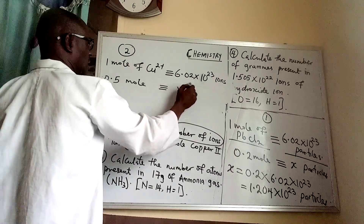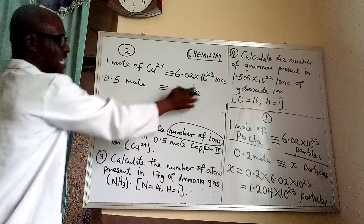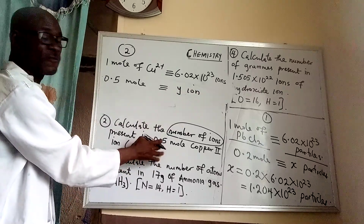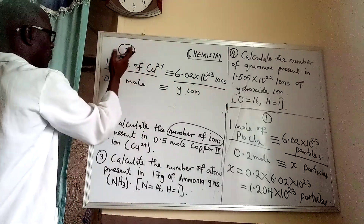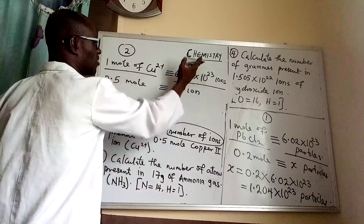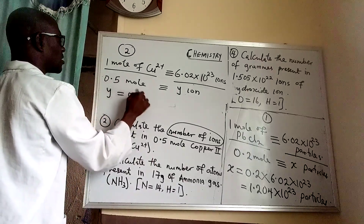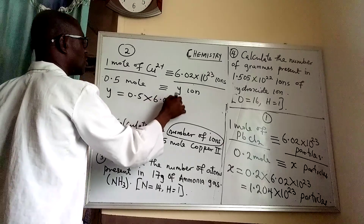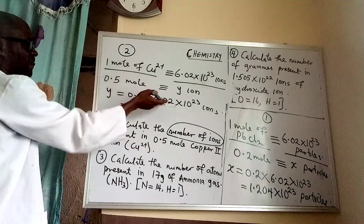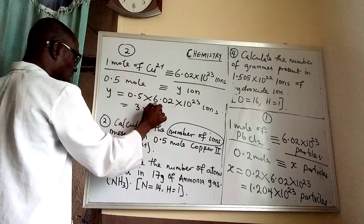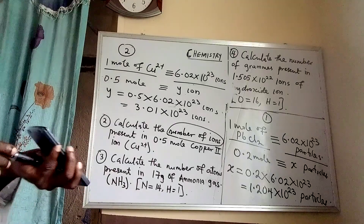So that means it's not going to be up to this value. Let's say 0.5 mole contains Y ions — Y represents the number of ions we are looking for. Put your division line here, ensuring that mole is over mole and ion is over ion. When you cross multiply, Y will be 0.5 times 6.02 times 10 to the power of 23 ions. Since 0.5 is half, that will be 3.01 times 10 to the power of 23 ions. That's the answer to question 2.